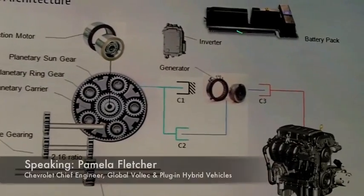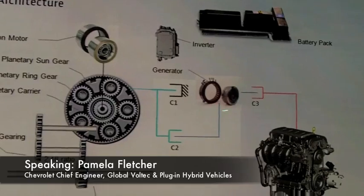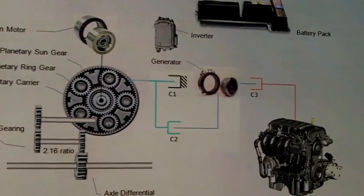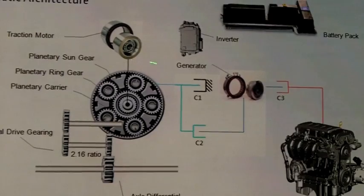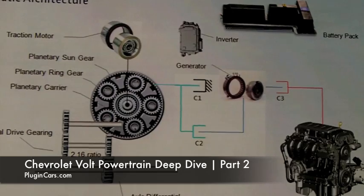Here is the battery pack that you've already seen. Here's our DC to AC and back converter. There's a generating motor, the small generating motor, the large traction motor. Here is the planetary gear set on the output, the final drive gearing, and the differential. The wheels of the car would be out here.